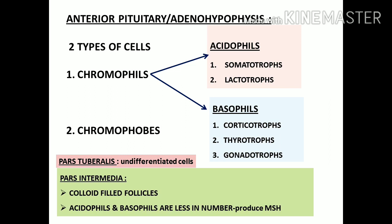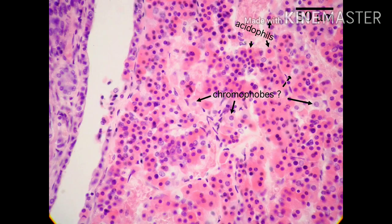The pars tuberalis consists of some undifferentiated cells. The pars intermedia consists of colloid-filled follicles, with trace amounts of acidophils and basophils also seen but in very small numbers. In the histologically stained picture, acidophils appear pink (taking acid stain), basophils are stained violet with hematoxylin, and chromophobes appear very pale. These cells are arranged in cord-like patterns, with blood-filled capillary sinusoids in between. Hormones released from these cells are directly liberated into these sinusoids.